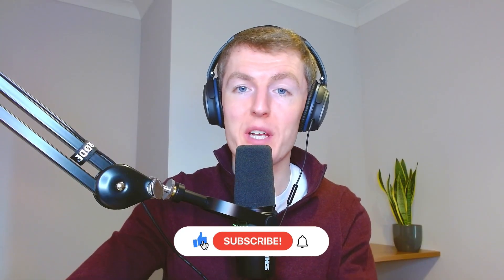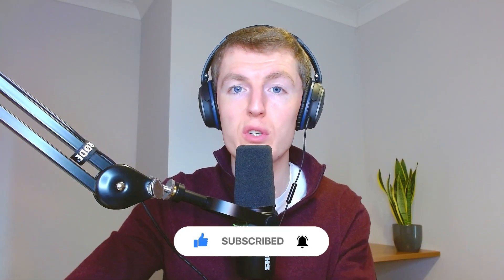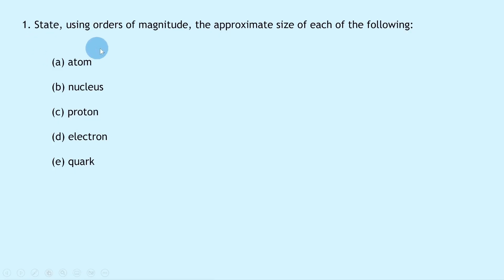Hey folks, welcome back. In this video we're going to go over two worked examples to show you how to do problems involving orders of magnitude. If you haven't already done so, check out my previous video covering the theory on this topic, and that way you can apply what you learned in that video to this one. Question one says to state, using orders of magnitude, the approximate size of each of the following: atom, nucleus, proton, electron, and quark.